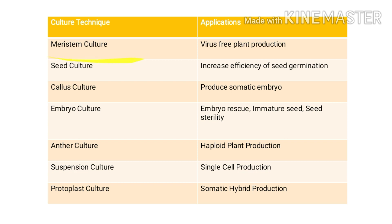In meristem culture, the tissue used is the meristem — the shoot apical meristem or root apical meristem — which has the highest capability for cell division. These cells continue to divide. Meristem culture is generally performed when you want to produce a virus-free plant. If you have a virus-infected plant and you want to produce a normal plant, you perform meristem culture to produce a virus-free plant.